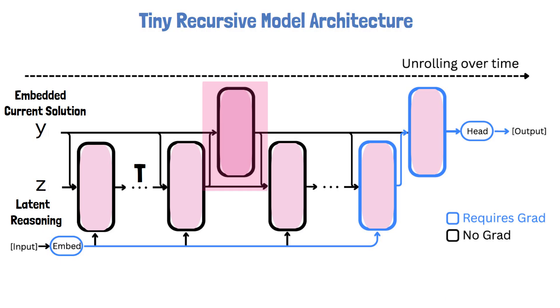Once these steps are done, we run a single step with a different role. The model now processes the refined latent reasoning z along with the current output embedding y to refine the output embedding. So here we update y. An important observation is that when updating y, the model doesn't use the input embedding. This separation helps the model clearly learn to distinguish between its two roles of reasoning refinement and output refinement. This is a main reason for why there is no need for two different modules.